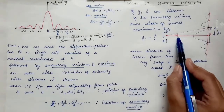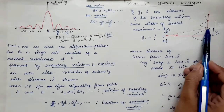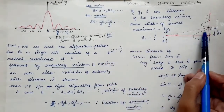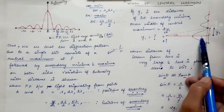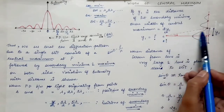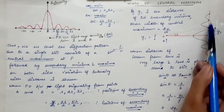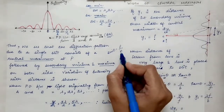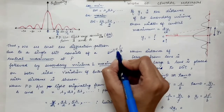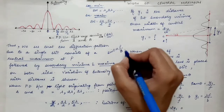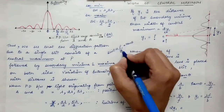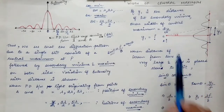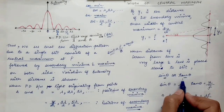Sin theta equals perpendicular over hypotenuse. When the screen is placed at a very large distance, the hypotenuse can be replaced with the base. Therefore sin theta is approximately equal to perpendicular over base, which is tan theta. So sin theta ≈ tan theta, and this condition is valid only when the screen is placed at a very large distance from the lens.